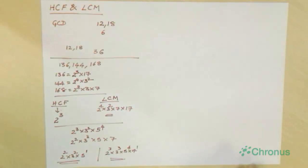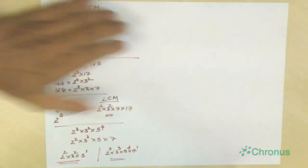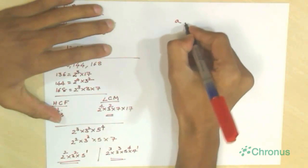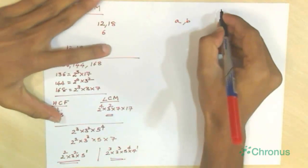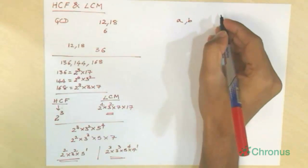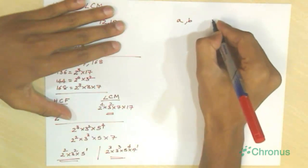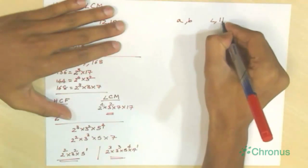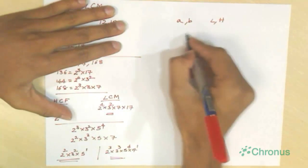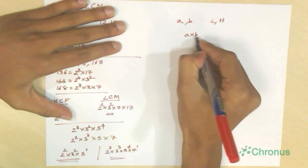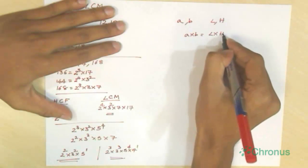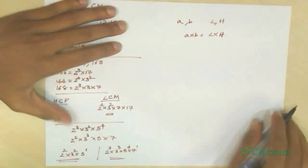An interesting property: given two numbers A and B, if the LCM of these two numbers is L and the HCF is H, then A multiplied by B equals L multiplied by H. This relationship holds between any two numbers.